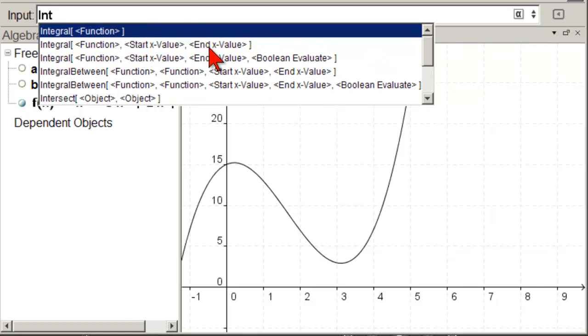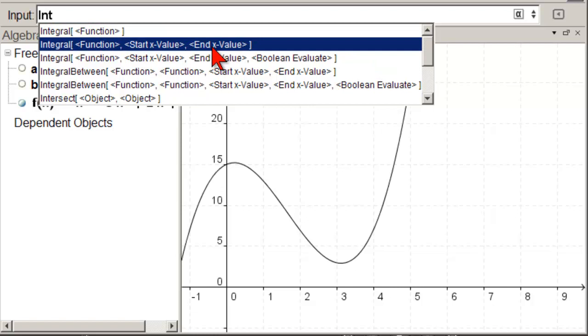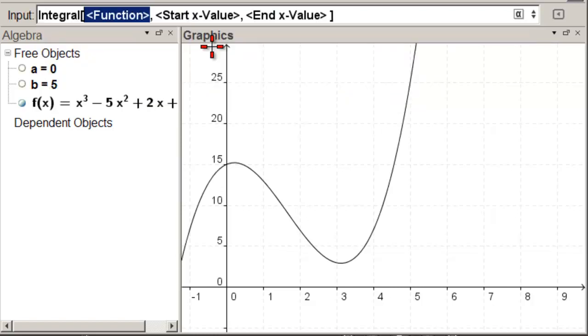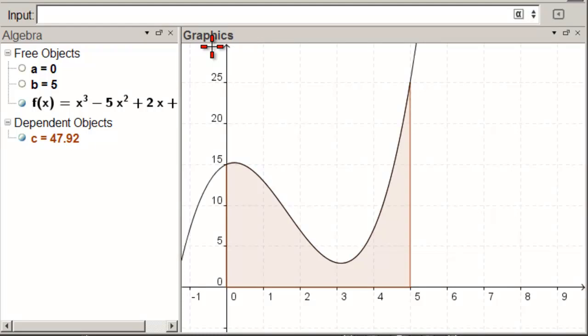We need this one that has a start value and an end value. So that one. And we put f for a function. And we come over to start value. It's the letter A. And the end value is the letter B. The value of the integral is actually the area underneath the curve.